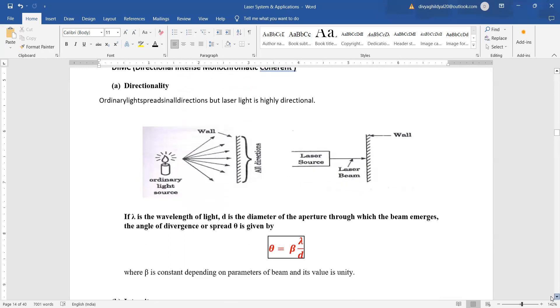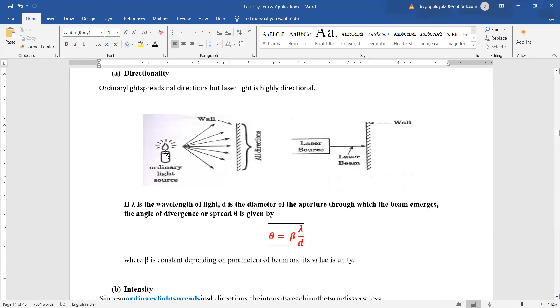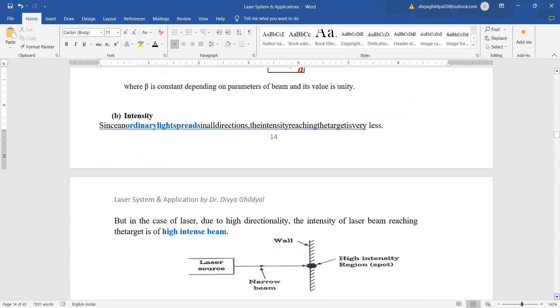Highly directional. That means as you can see here in this figure, ordinary light is spreading but our laser light is highly directional and you can expect numericals on this formula that if lambda is the wavelength of light, D is the diameter of the aperture or opening through which your light beam is emerging and angle of divergence or the spread. Then theta is equal to beta lambda D where beta is a constant depending on parameters of beam and its value usually is unity. So angle is arc upon radius.